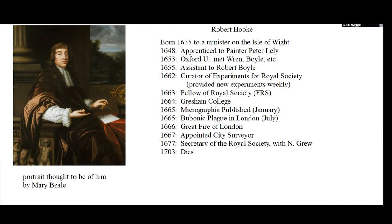Most importantly, while he was at Oxford, he met Christopher Wren and Robert Boyle, and they became a group of budding young scientists. Boyle was a man who had a lot of resources, and eventually Hooke became Boyle's assistant. This all took place in a few years — at this point he was about 20 years old when he joined Robert Boyle.